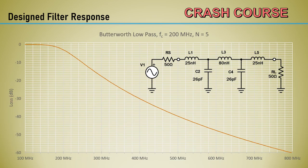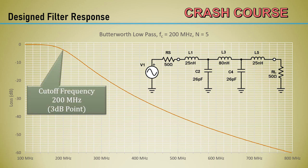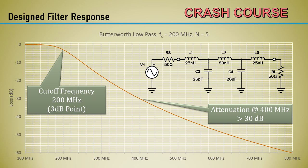Here's the designed filter response. See the cutoff frequency or 3 dB point at 200 MHz. The attenuation of 30 dB at 400 MHz was barely achieved. Remember the calculated order was 4.98, and we rounded to the fifth order. In the real world, you would probably need more margin.